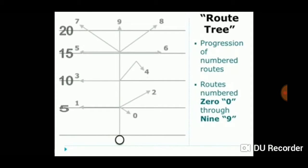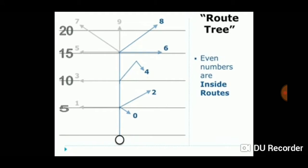The individual routes are numbered 0 through 9, with the larger numbers indicating deeper routes on the tree. All the even-numbered routes are inside routes that take the receiver to the middle of the field, and all the odd-numbered routes are sideline routes.